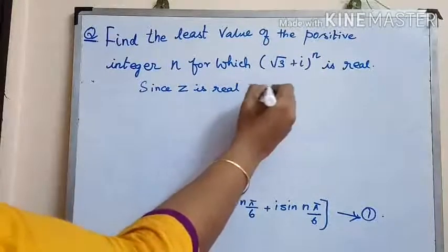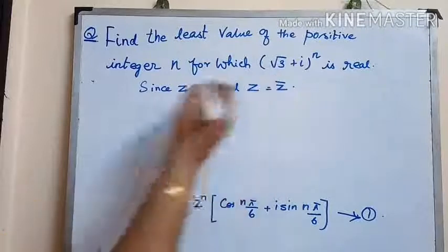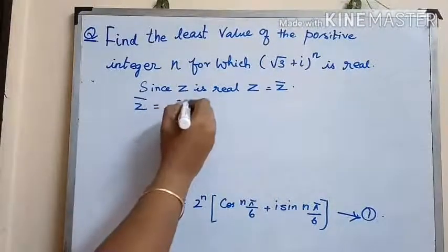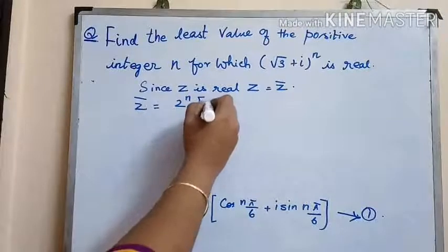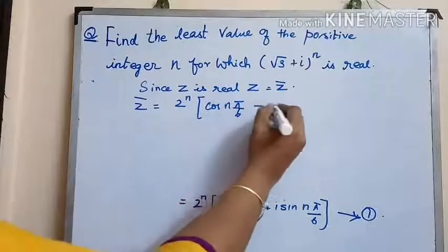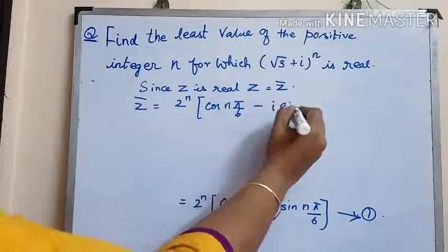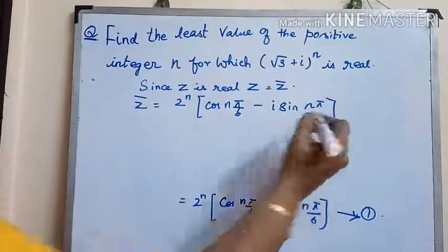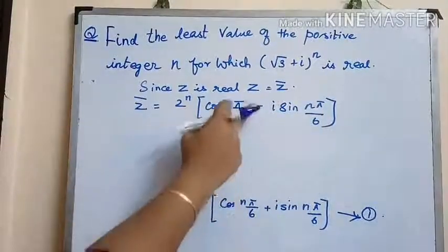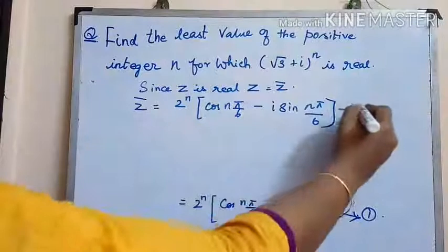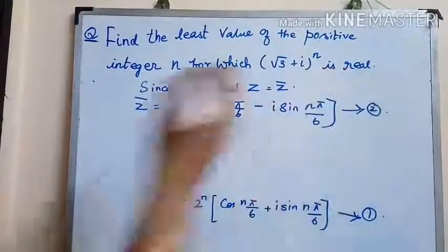Since z is real, z = z̄. So z̄ = 2^n[cos(nπ/6) - i·sin(nπ/6)]. It's the conjugate of z. So here z and z̄ are equal, so equations 1 and 2 are equal.